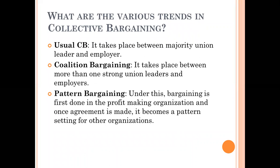Coalition bargaining is very different. Coalition bargaining takes place between more than one trade union leader on one side and employers on the other side. Many trade union leaders will be there on one side and many employers on the other side. This kind of bargaining involves a coalition of parties.